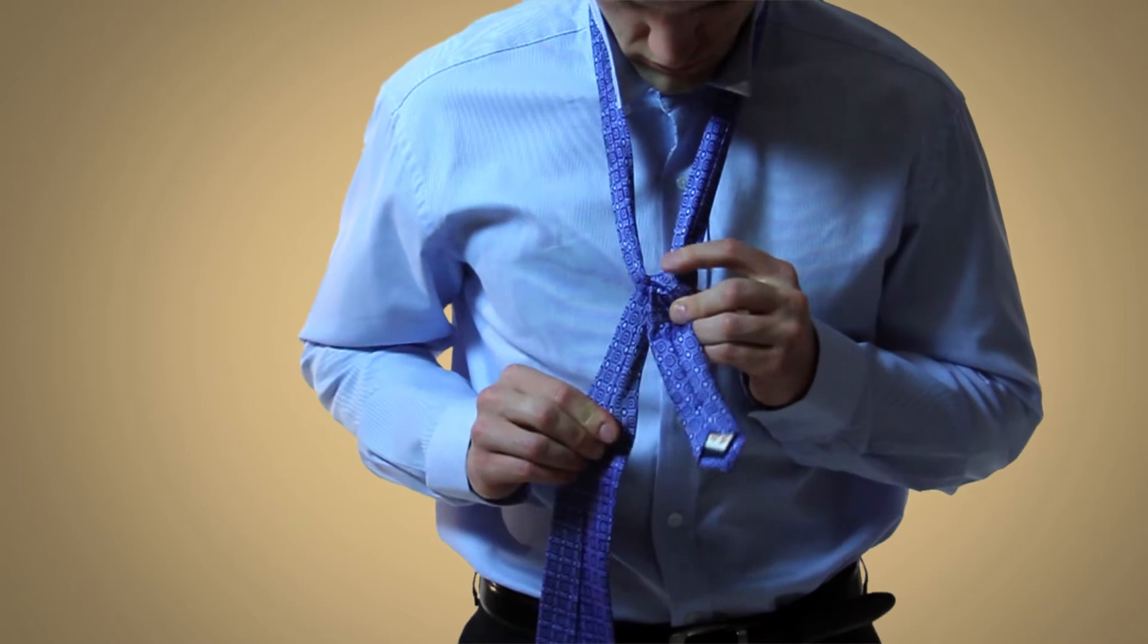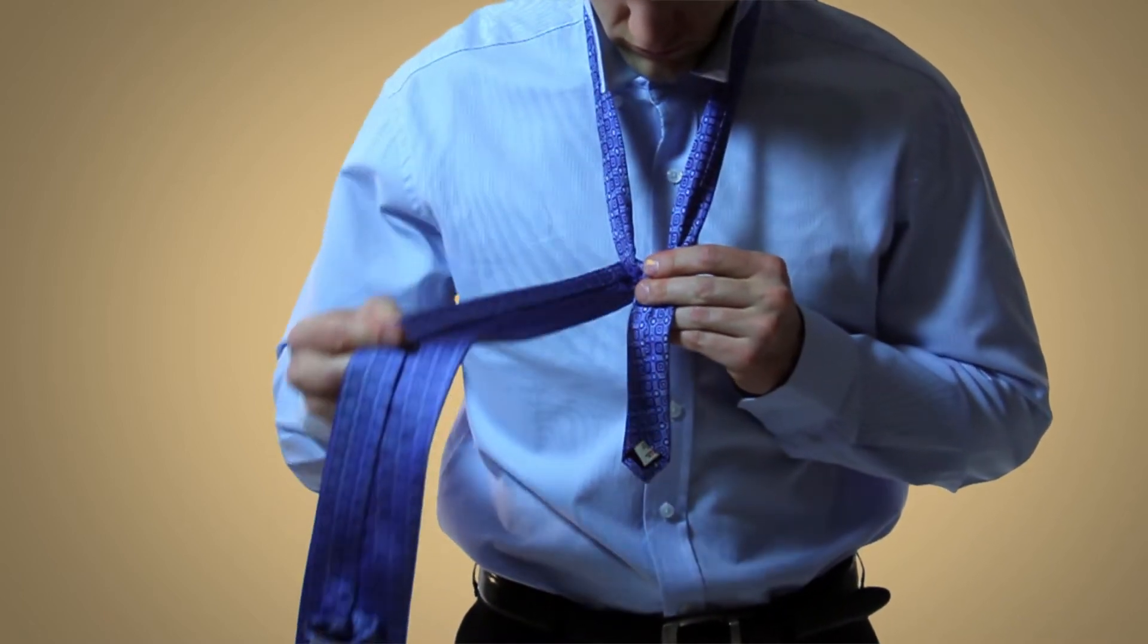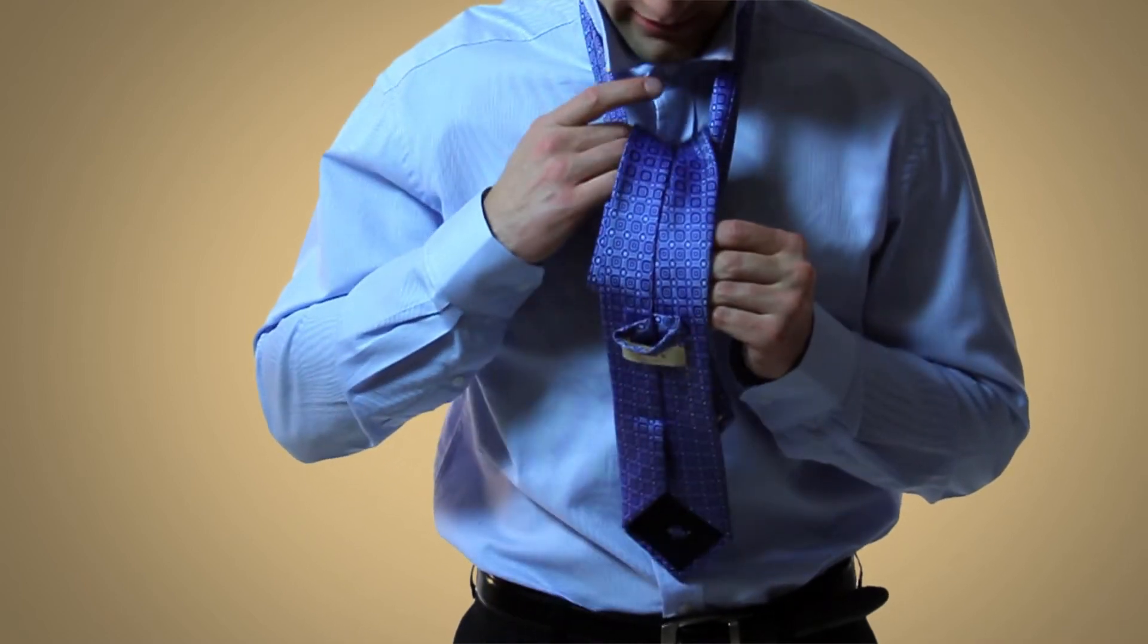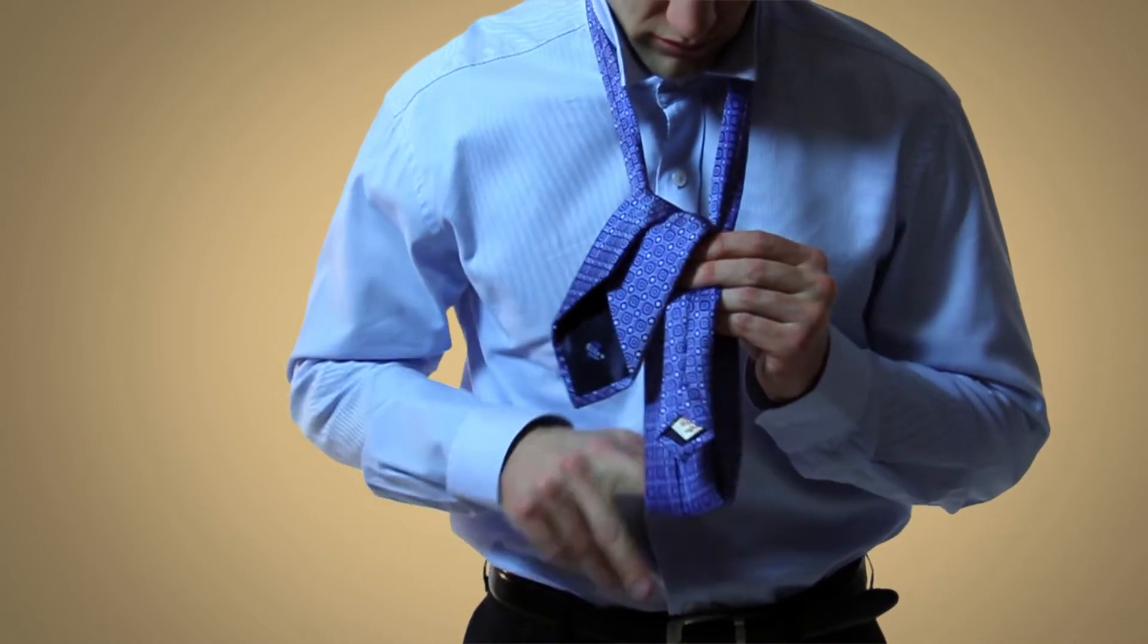Next take the wide end and go up and down through the loop created by your neck again. This time pulling it down to the left.